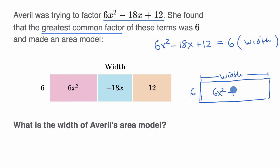6x² - 18x + 12. And that's exactly what's drawn here. Now what's interesting is that they broke up the area into three sections.